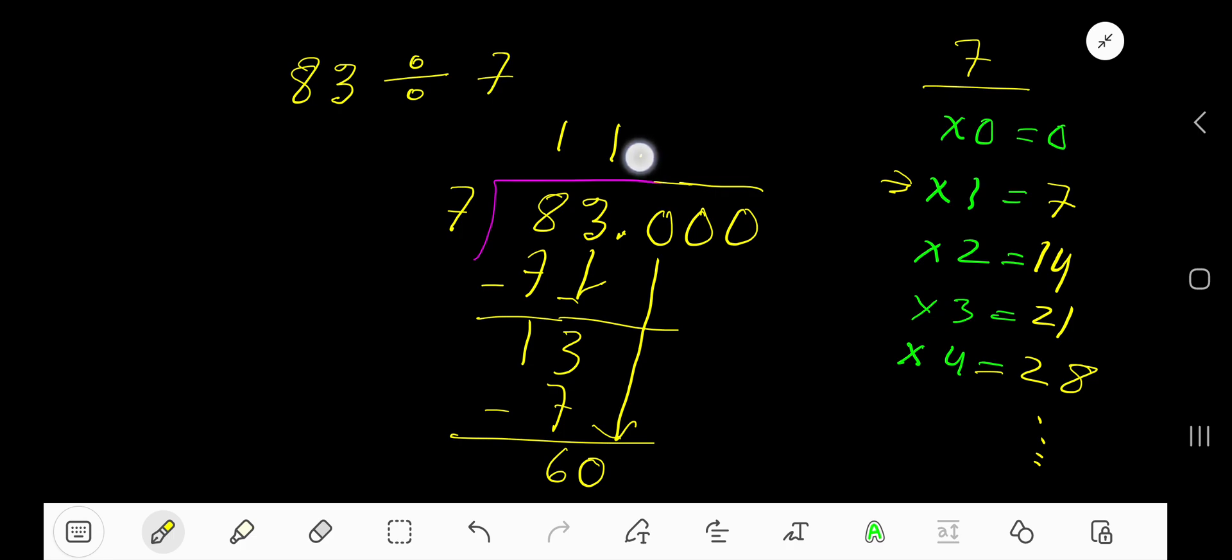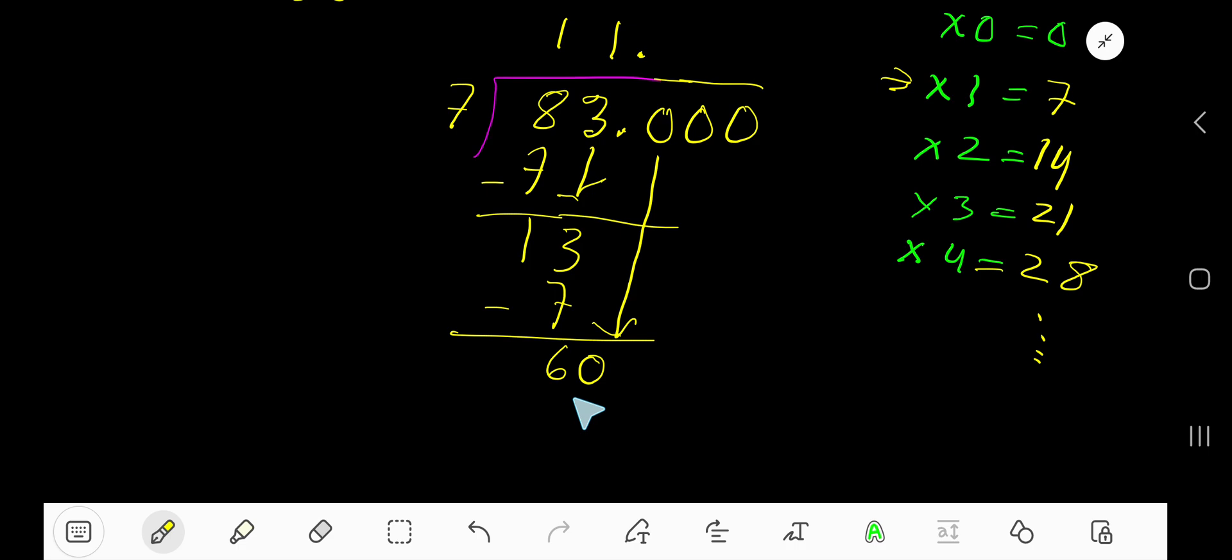Now 7 goes into 60 how many times? 7 times 8 equals 56. 7 times 9 equals 63. 56 plus 7 is 63, so for 60 you have to stop here. 8 times.